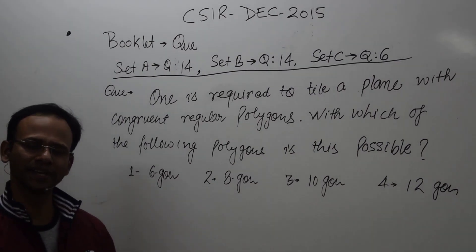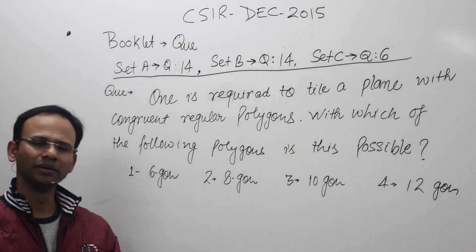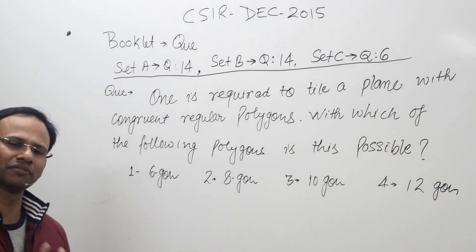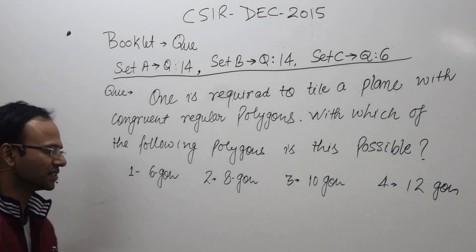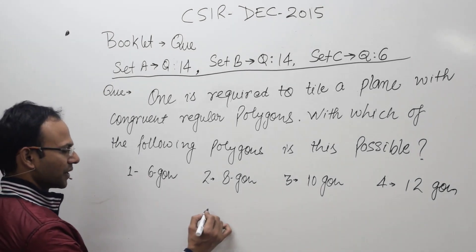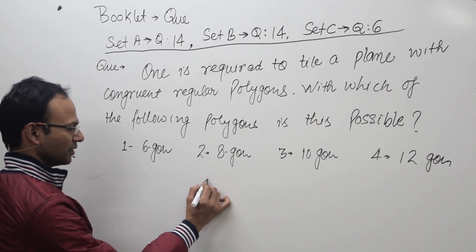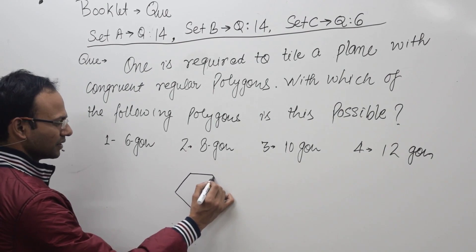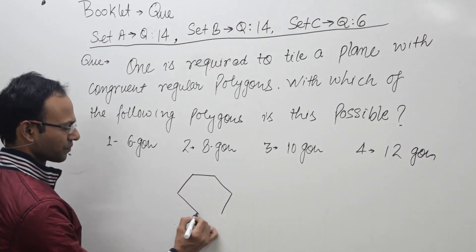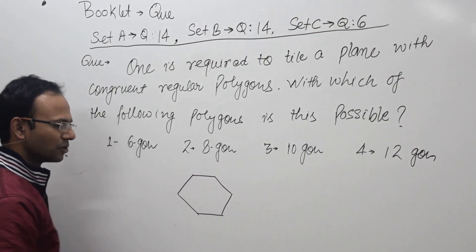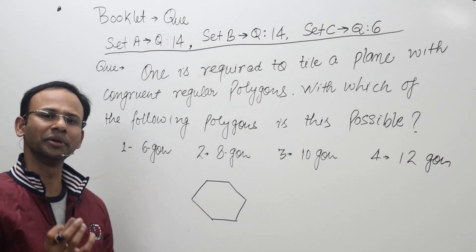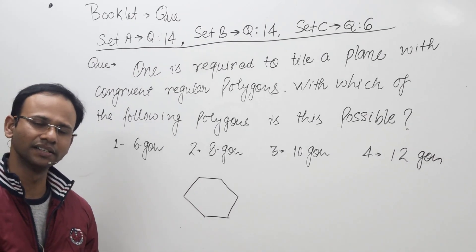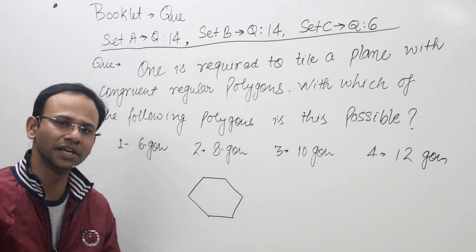The question asks: we are making a tile with the help of some regular polygons — with which of the following polygons is it possible? Let's consider regular polygons. Suppose we take a regular hexagon. A regular hexagon is the combination of 6 equilateral triangles.